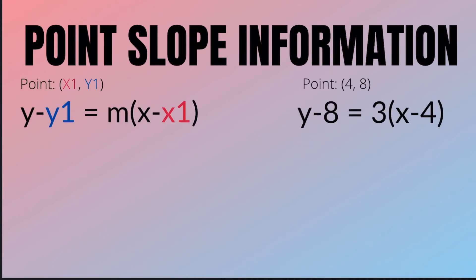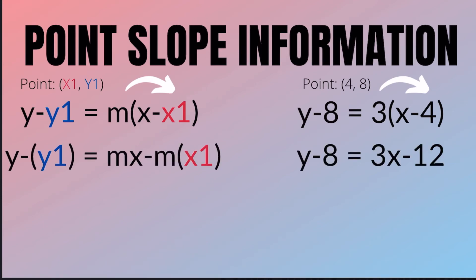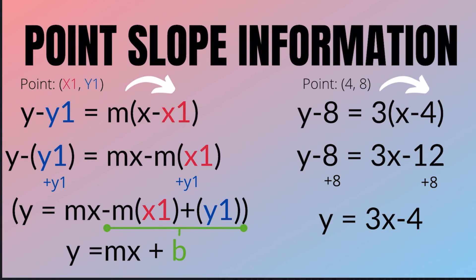Just distribute the m to the x minus x1 term. Then isolate the y by moving y1 to the other side. Remember to add or subtract y1 to the term that's without an x attached by its side.